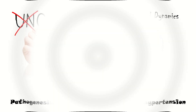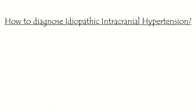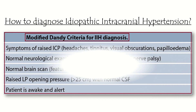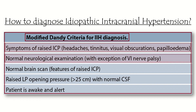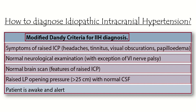The diagnostic criteria for idiopathic intracranial hypertension were first postulated by Dundee in 1937 and later revised by Smith in 1985. The modified Dundee criteria include: symptoms of raised intracranial pressure such as headache, tinnitus, visual obscurations, and papilledema; normal neurological examination with the exception of 6th nerve palsy; normal brain scan with features of raised intracranial pressure; raised lumbar puncture opening pressure of more than 25 cm with a normal CSF; and the patient being awake and alert.